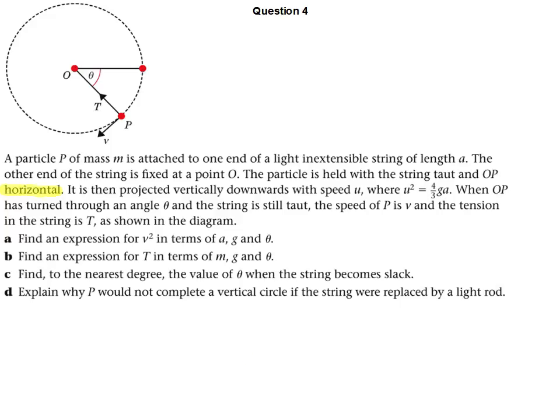They've given us the initial speed, and they've told us it's a light and extensible string, and we've got to try and work out what the velocity is as you move around the circle, what the tension in the string is as you move around the circle, and then you've got to try and figure out, in general, whether or not it moves all the way around the circle.